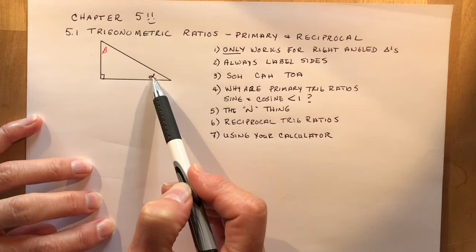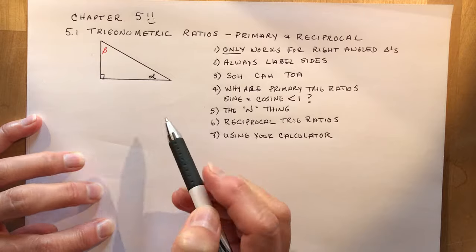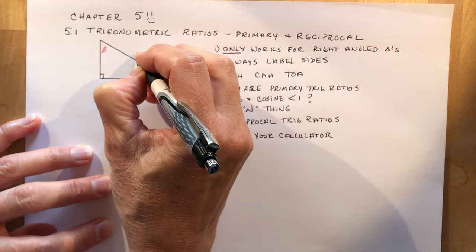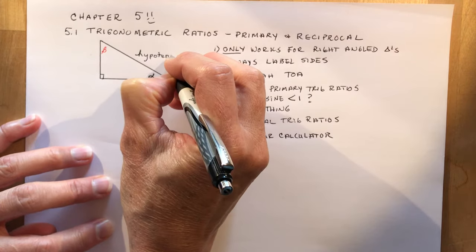So let's say we're at this angle here, alpha, this one's beta up here. If I'm at alpha, the hypotenuse is always the hypotenuse. It never changes, it's the longest side.